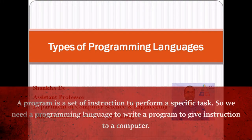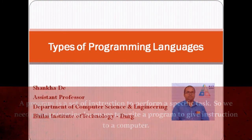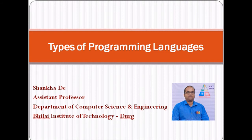A program is a set of instructions to perform a specific task. To write a program we need a programming language. There are different types of programming languages.